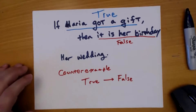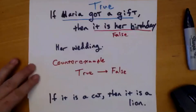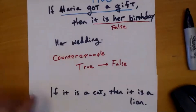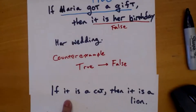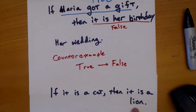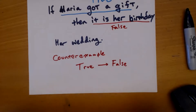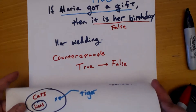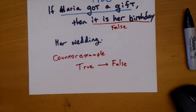Going back to 'if it is a cat, then it's a lion' — your hypothesis was 'it is a cat' (true), but 'it's a lion' is a false conclusion. The counter example was a tiger, jaguar, or something like that. A counter example: true hypothesis, false conclusion.